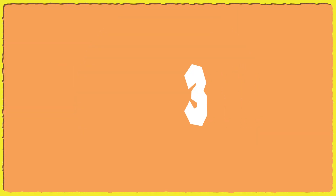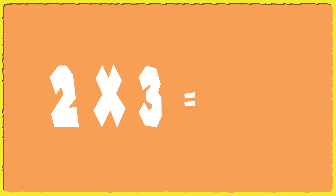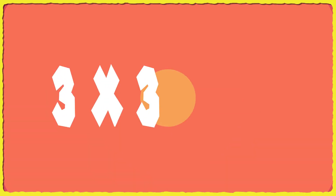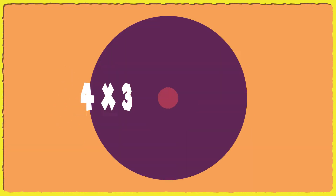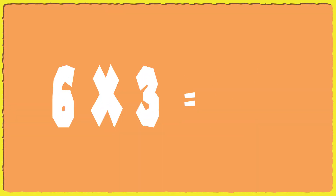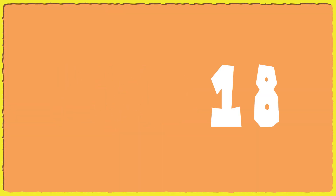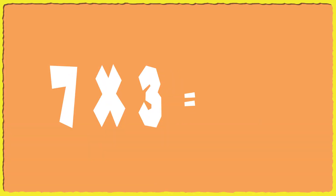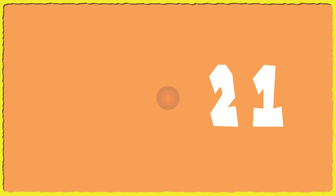1 times 3 — 3. 2 times 3 — 6. 3 times 3 — 9. 4 times 3 — 12. 5 times 3 — 15. 6 times 3 — 18. 7 times 3 — 21.